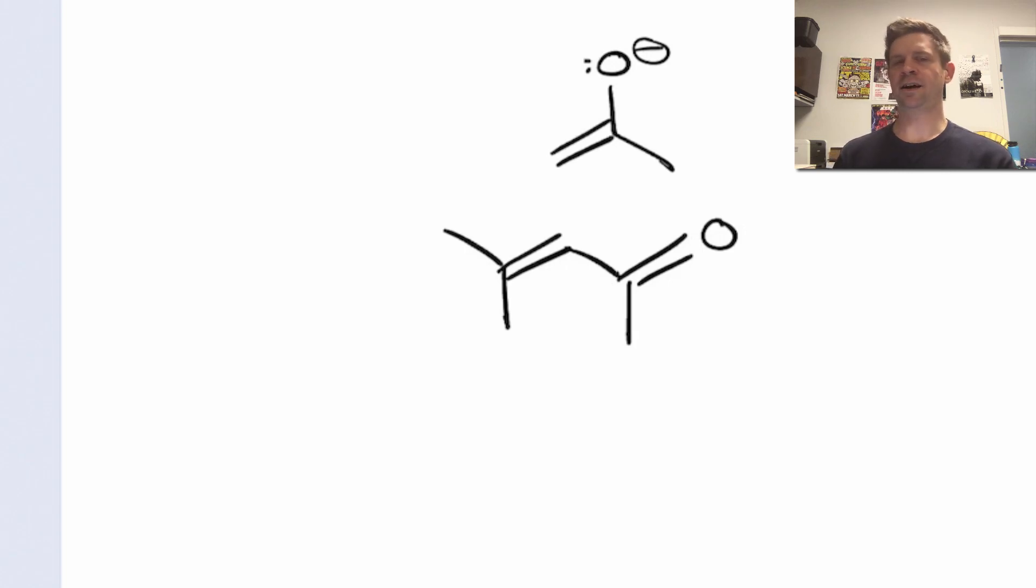If we try to use enolates in conjugate addition reactions, we generally get a mixture of 1,4 and 1,2 addition if we're reacting with, for example, an alpha-beta unsaturated ketone.